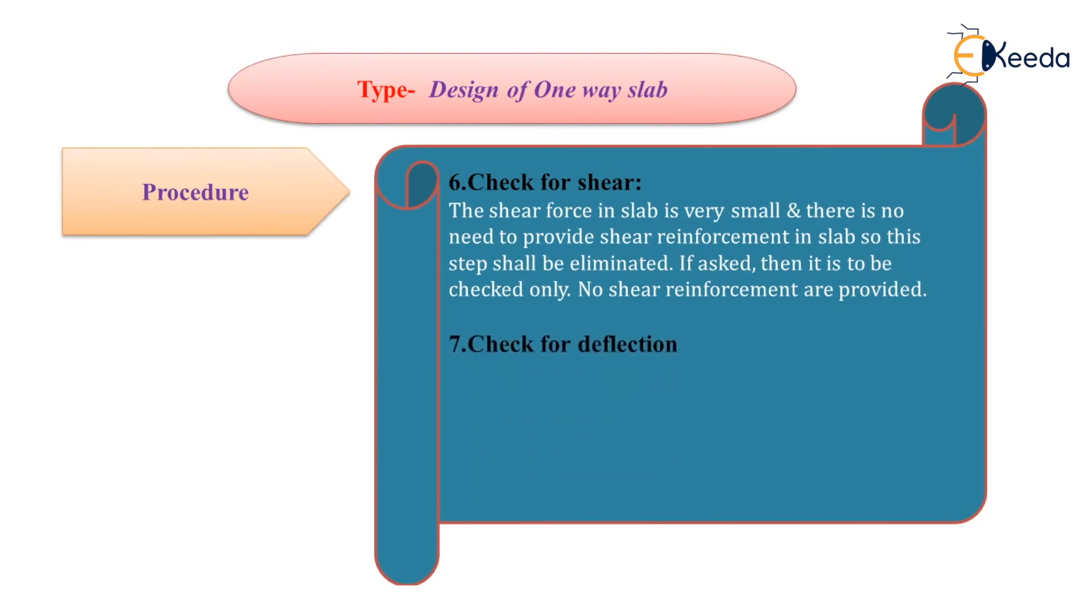Next step is to check for deflection. We know the procedure: firstly calculate the percentage of steel, then FS value. From the FS value and percentage of steel, from figure number 4 of IS456, we can find out the KT value, the modification factor.